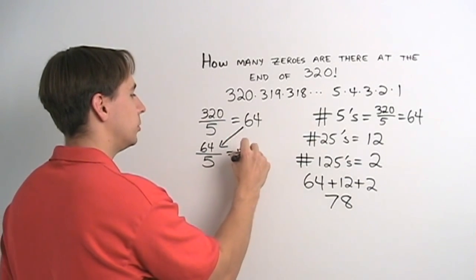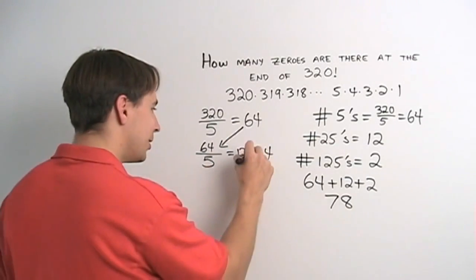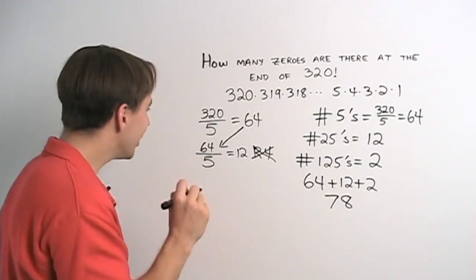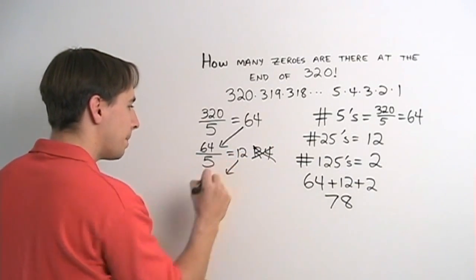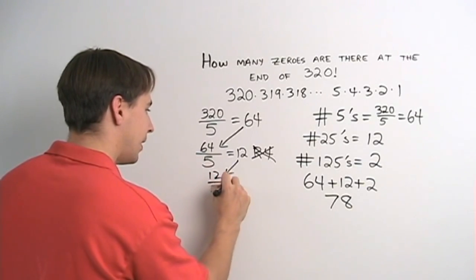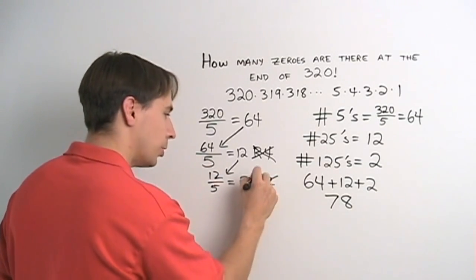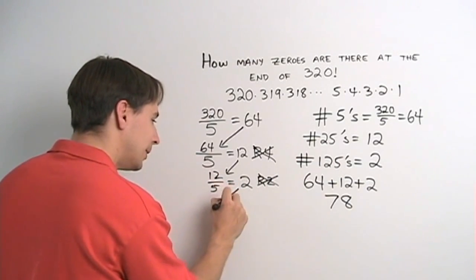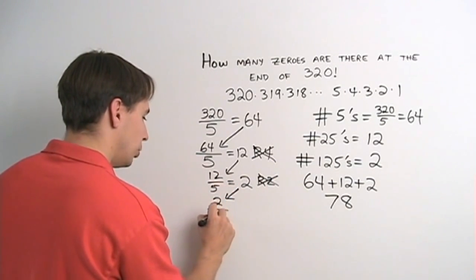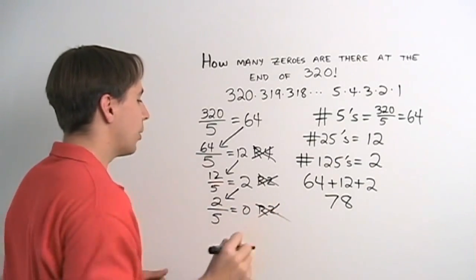Then we take this 64 and we divide that by 5. And that gives us 12 with a remainder of 4. And fortunately, this is one of those times when we can ignore the remainder. We like ignoring the remainder. And we take that 12 and we divide that by 5. And we get 2 with a remainder of 2, which we're going to ignore. We take 2, divide by 5, we get 0 with remainder of 2. And that means we're done. We could ignore that remainder too.